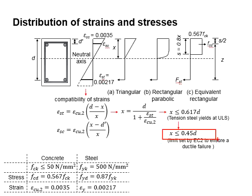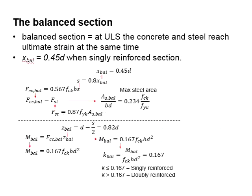This brings us to the topic we need to discuss in this video regarding the balanced section. The balanced section refers to a state where the concrete and the steel are reaching their limits at the same time at the ultimate limit state.